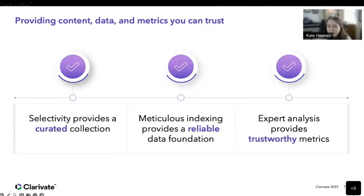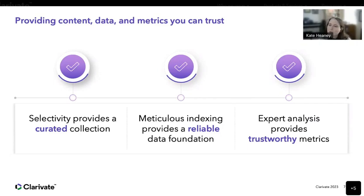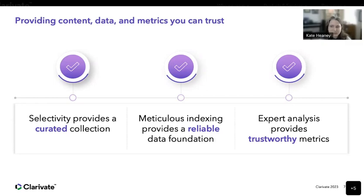We are focused on providing content, data, and metrics that you can trust in the face of these negative trends. We curate the Web of Science Core Collection and Journal Citation Reports so you can be confident that you are consulting trustworthy quality sources. Only journals that pass our rigorous selection process are included in the Web of Science Core Collection or Journal Citation Reports.